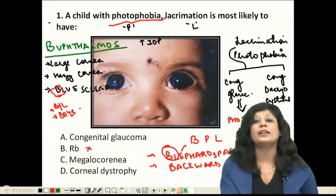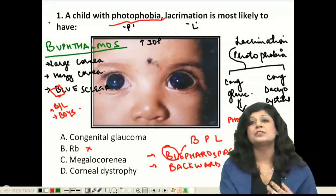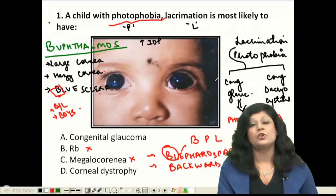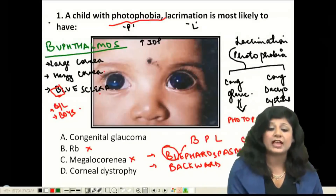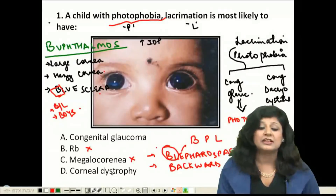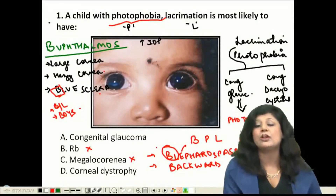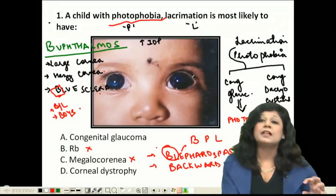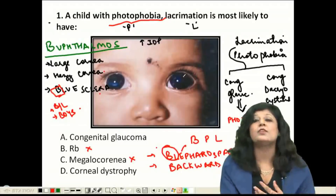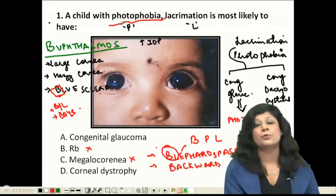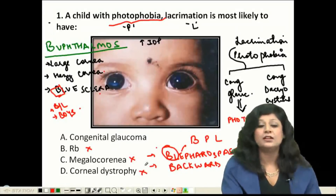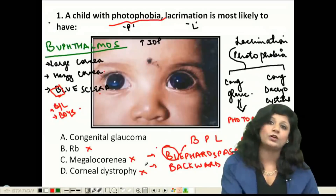All these symptoms rule out megalocornea. Regarding corneal dystrophy, we won't have a large cornea or hazy cornea; rather, the degeneration is usually in the periphery of the cornea. These dystrophies are bilateral but non-inflammatory, so there would be no photophobia. Therefore, corneal dystrophy is not a possibility. The answer here is congenital glaucoma, or buphthalmos.